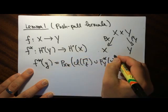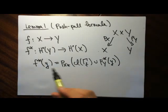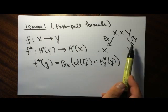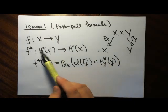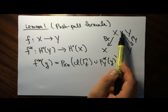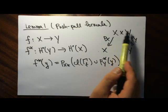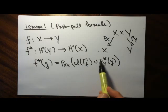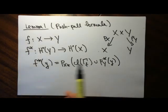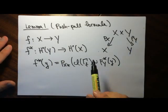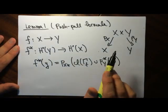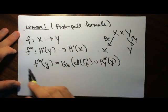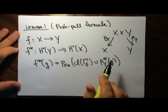So why is it a push-pull? You start with your class in cohomology on Y, you pull it back to the product, then you can intersect it with the graph — this is the cup product, but in terms of Chow rings it corresponds to an intersection — and then you push it forward. That's what this formula says.